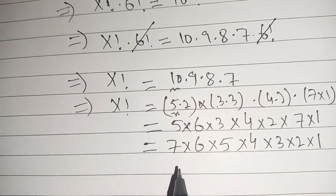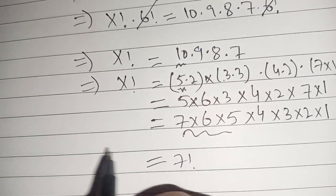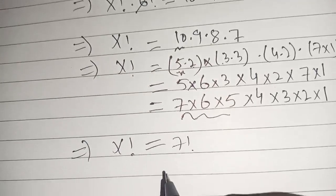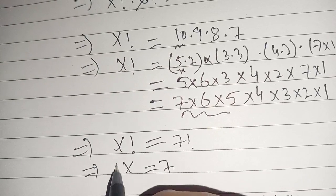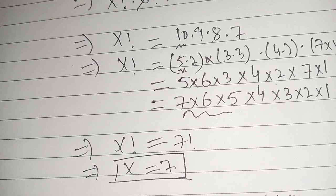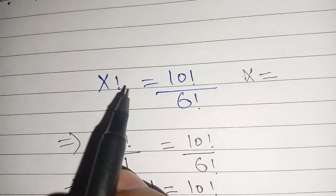And it is equal to 7 factorial. Thus x factorial is equal to 7 factorial which implies x is equal to 7. Thus the value of x is equal to 7 which satisfies our given equation x factorial is equal to 10 factorial divided by 6 factorial.